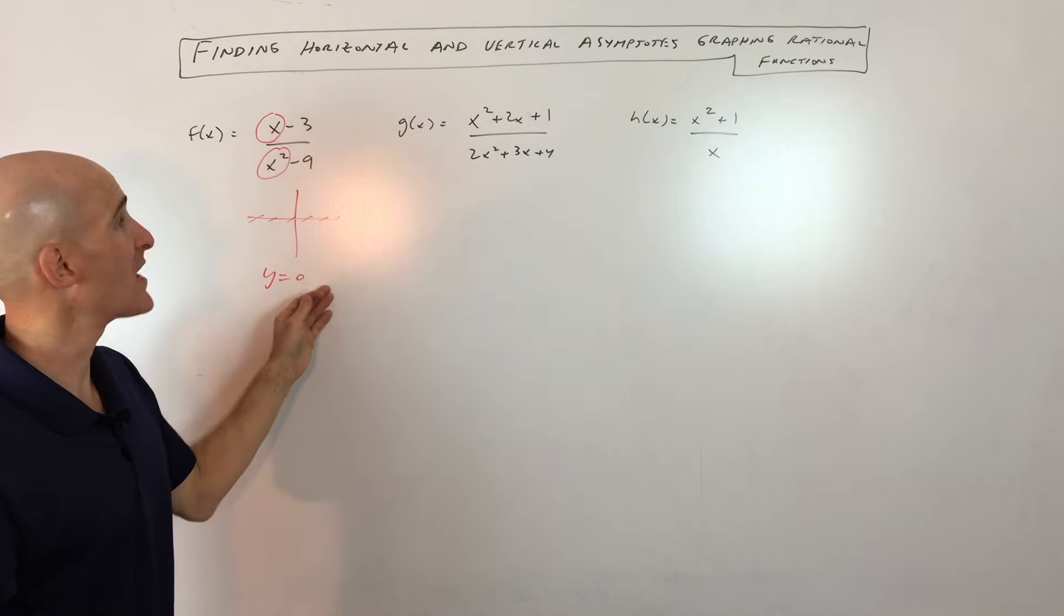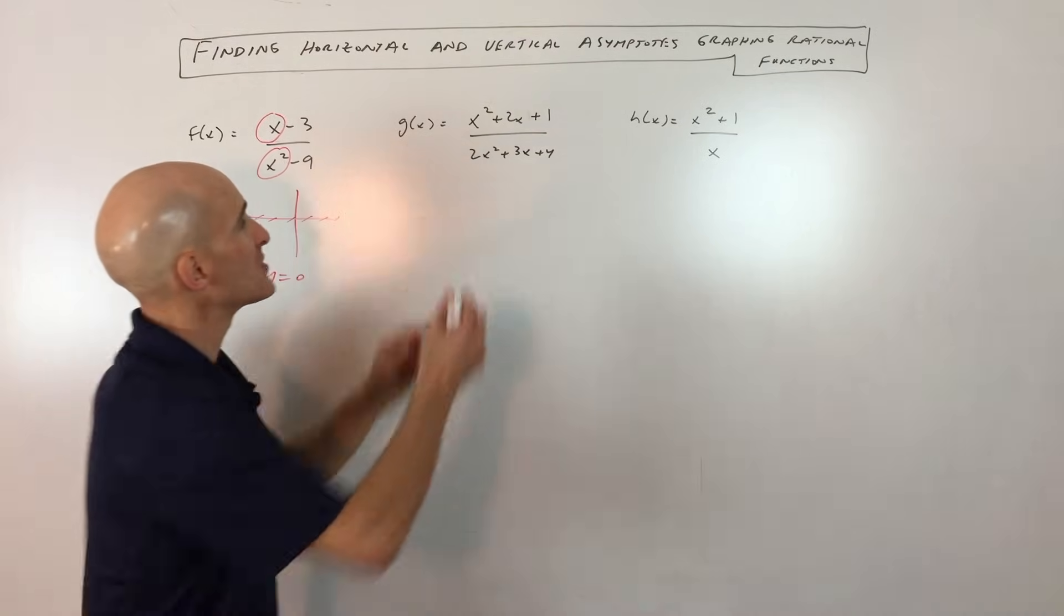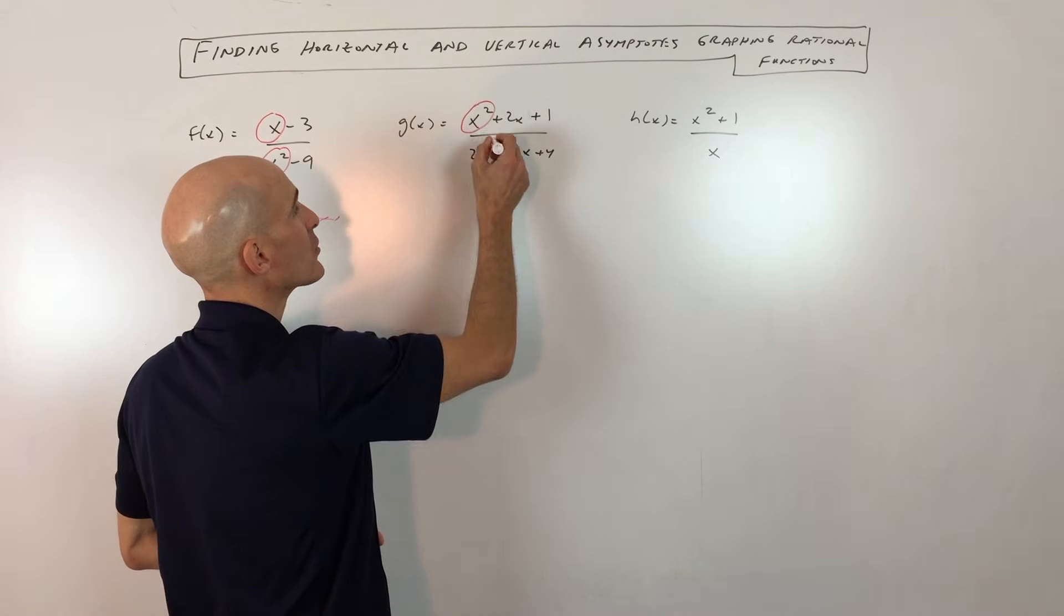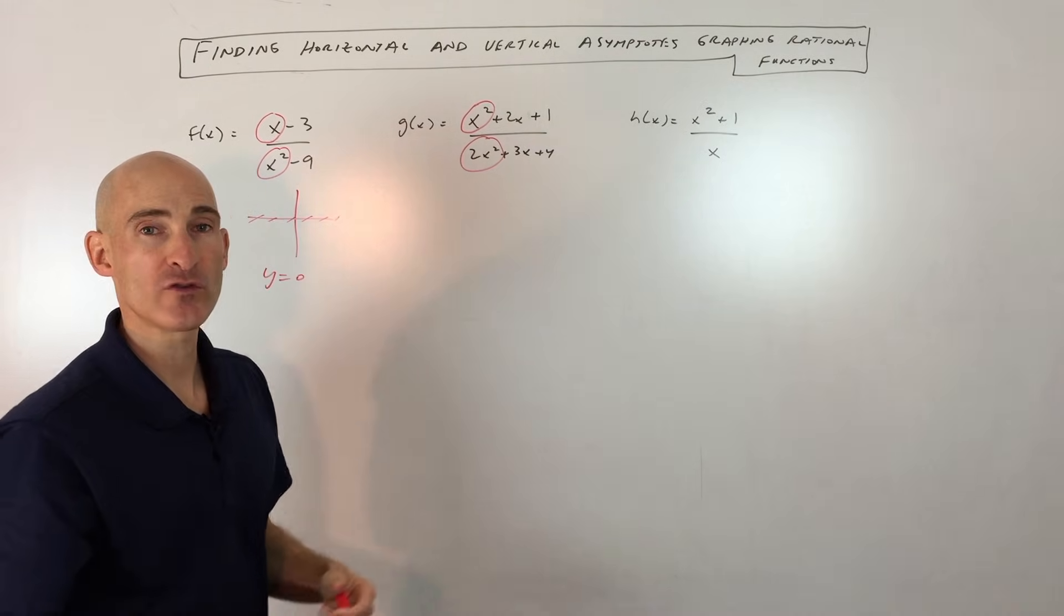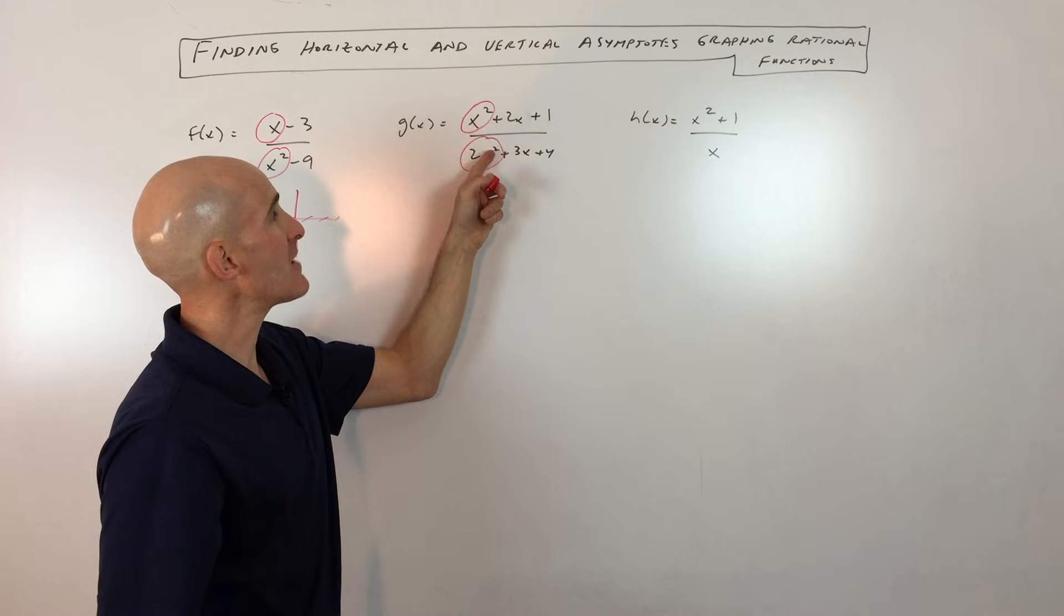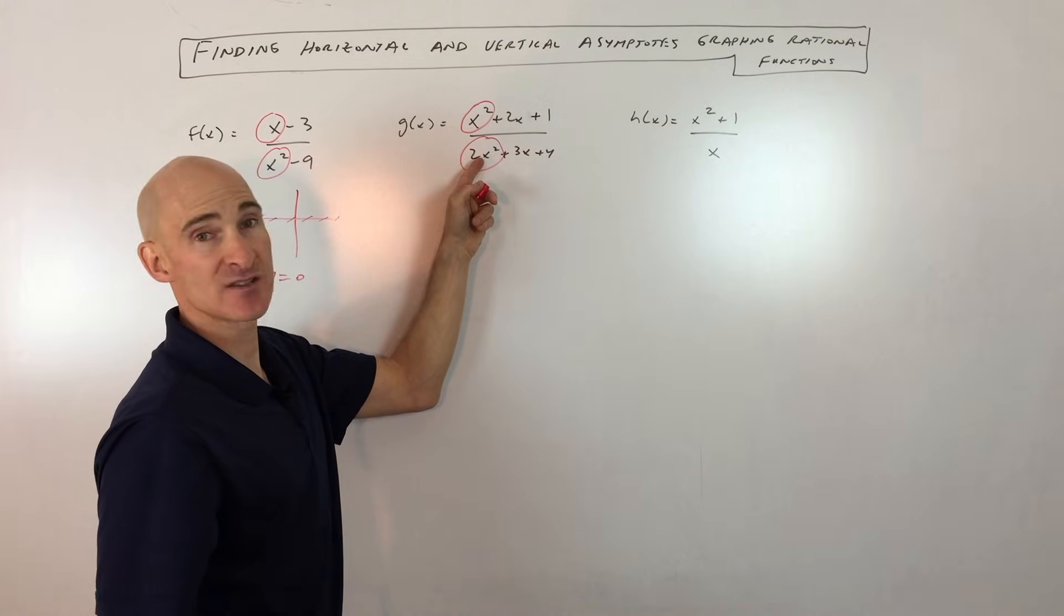So we're getting y equals zero for a horizontal asymptote. Now in this one, you can see that the highest degree term in the numerator and the highest degree term in the denominator, they're the same. They don't have to be squared, they could be cubed or fourth degree and so forth. But if they're the same,